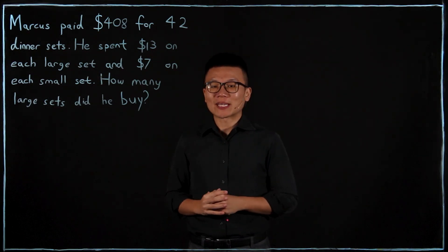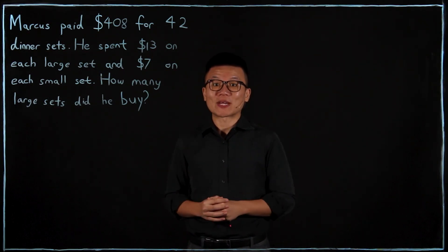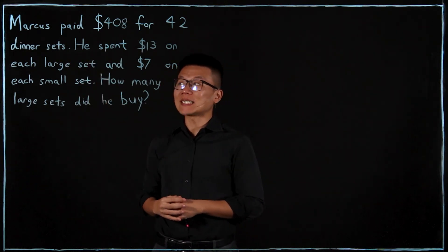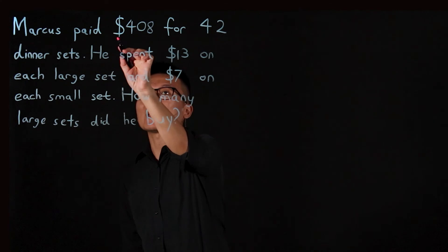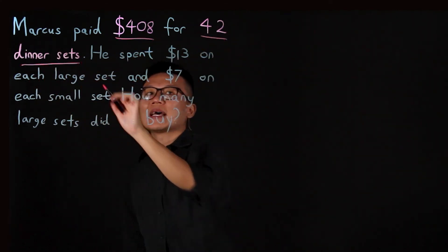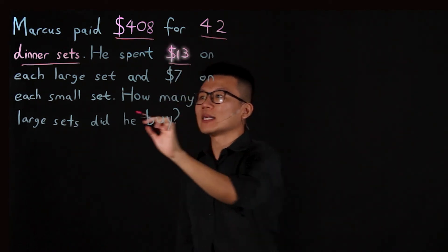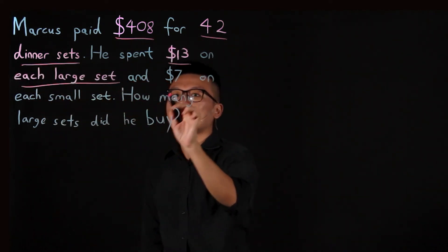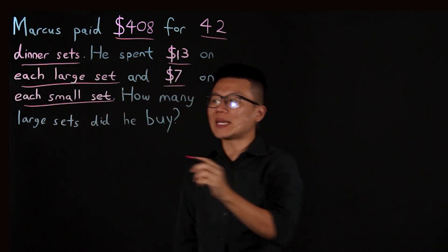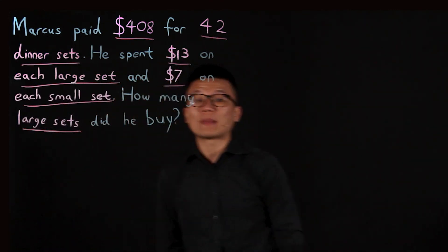Hi and welcome back. Today we are going to take a look at this assumption question. First of all, let's read the question first. It says that Marcus paid $408 for 42 dinner sets. He spent $13 on each large set and $7 on each small set. How many large sets did he buy?